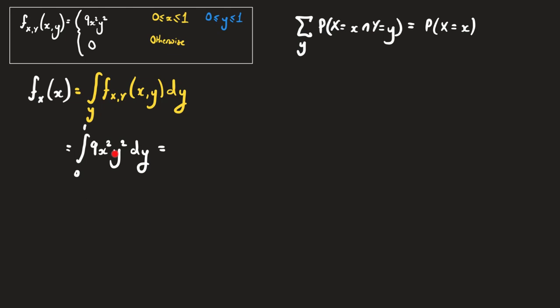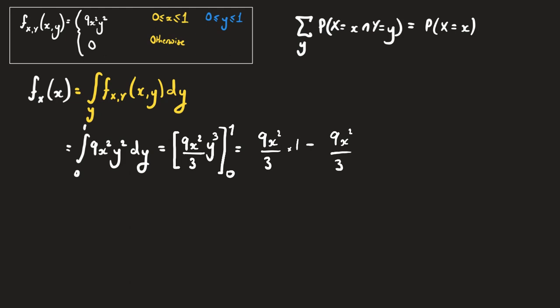Raising y² to the next power and dividing by the new power gives 9x² times y³/3, evaluated between y=1 and y=0. This equals 9x²/3 times 1 minus 9x²/3 times 0, which gives 9x²/3 times 1. Since 9/3 = 3, the marginal PDF of x is equal to 3x².